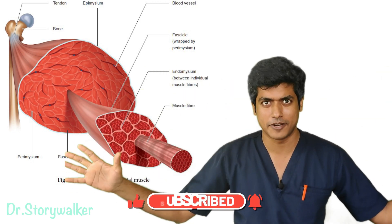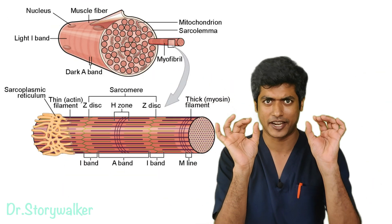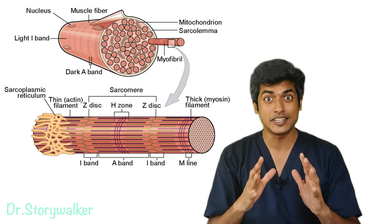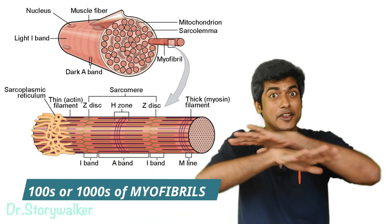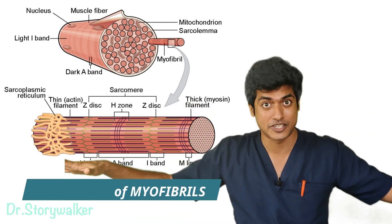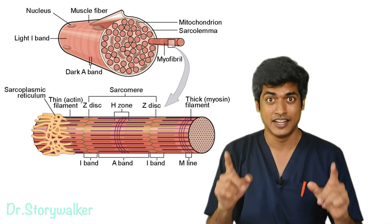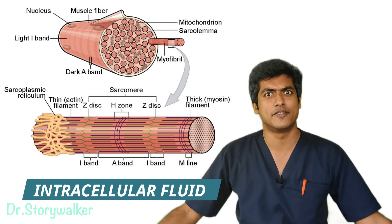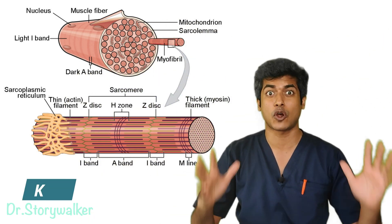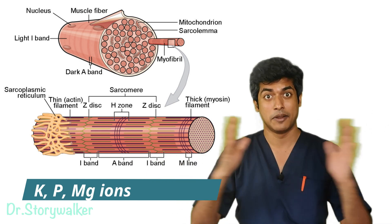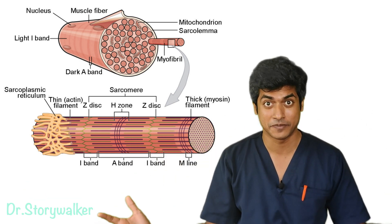Muscles are made up of cells called muscle fibers. Each muscle fiber contains thousands of myofibrils. These myofibrils are bathing in liquid — a fluid that contains salts like potassium, phosphate, and magnesium.